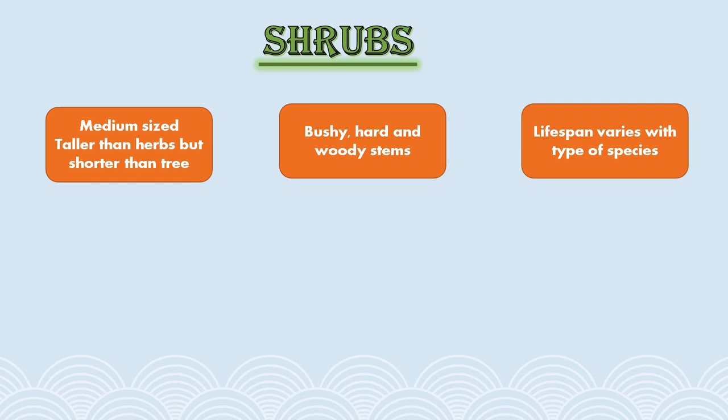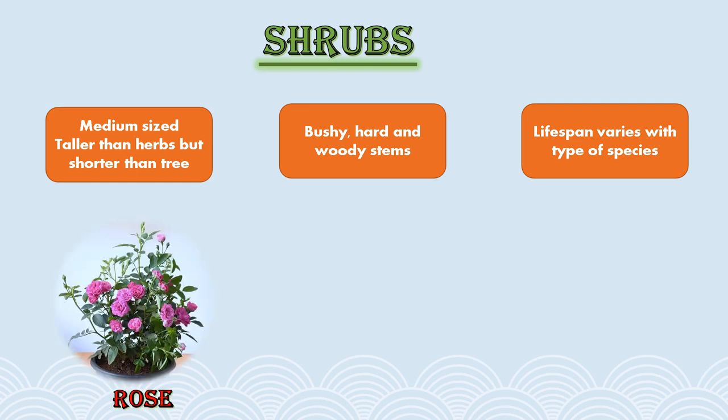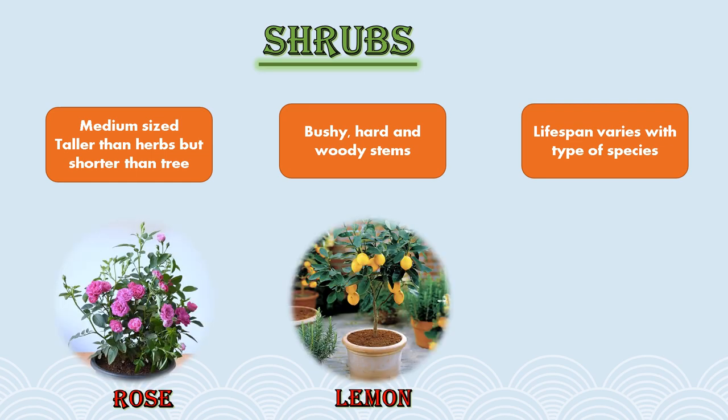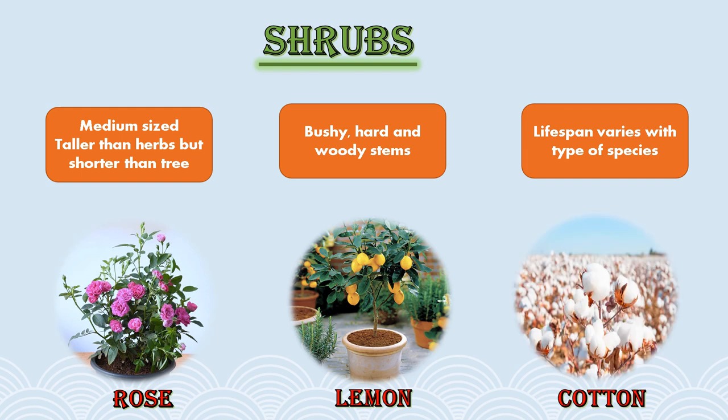Some examples of shrubs are the rose plant, lemon, and cotton plant. We sometimes get confused between herbs and shrubs, but remember that herbs are plants with soft and delicate stems. Shrubs are taller than herbs and have a hard woody stem with branches.